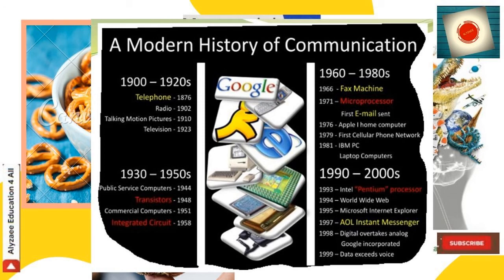Then integrated circuits were created — what we nowadays call the chip — in 1958. Moving from the 1960s to 1980s: in 1971 microprocessors arrived; the first email was sent in 1976; the Apple home computer came in 1979; the first cellular phone network followed. Then in 1981, IBM PC or laptop computers were introduced.